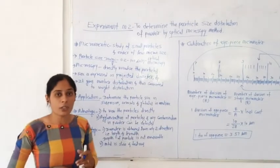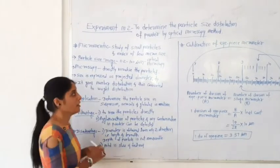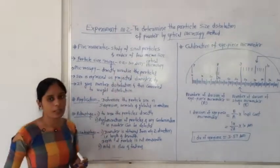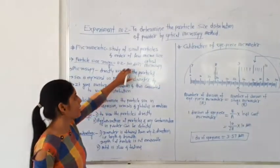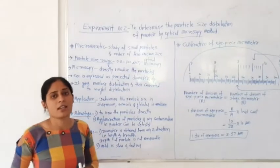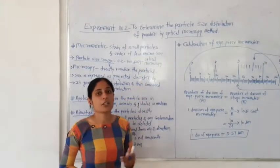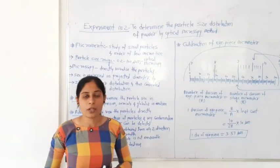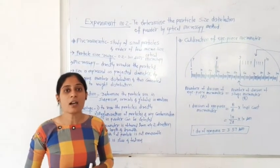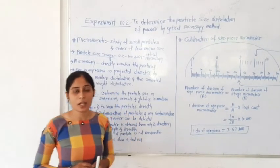Whatever particle size we have to measure, that particle size should be in the range of 0.2 to 100 micrometers. This particle size range is used in the optical microscopy method. In the optical microscopic method, first we use the compound microscope. With the help of the compound microscope, we can determine the particle size and particle size distribution.